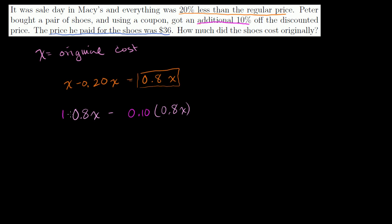This is 1 times 0.8x. This is the same thing as 1 minus 0.1. So this is the same thing. This is equal to 90% of 0.8x.